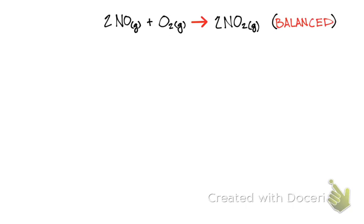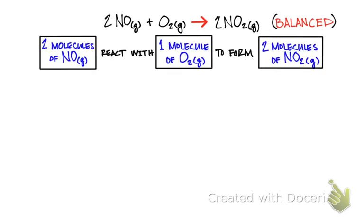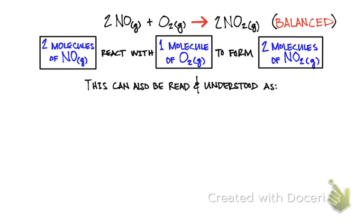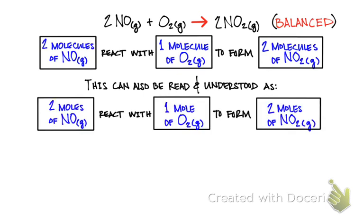Shown here is the balanced chemical reaction equation between nitrogen monoxide gas and oxygen gas. This chemical reaction equation can be read as two molecules of nitrogen monoxide gas reacting with one molecule of oxygen gas to form two molecules of nitrogen dioxide gas. This same reaction equation can also be read as two moles of nitrogen monoxide gas reacting with one mole of oxygen gas to form two moles of nitrogen dioxide gas.